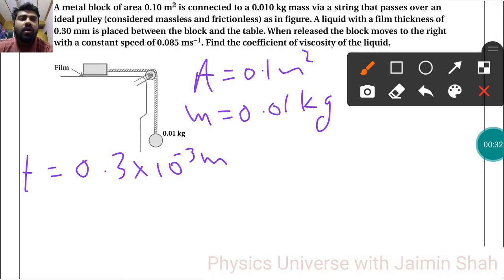When released, the block moves to the right with a constant speed V = 0.085 meters per second. Find the coefficient of viscosity of the liquid, eta. The formula for eta is force upon area times velocity upon thickness.